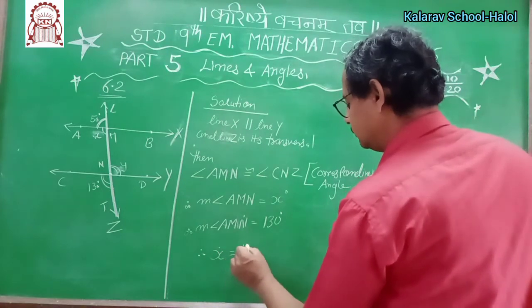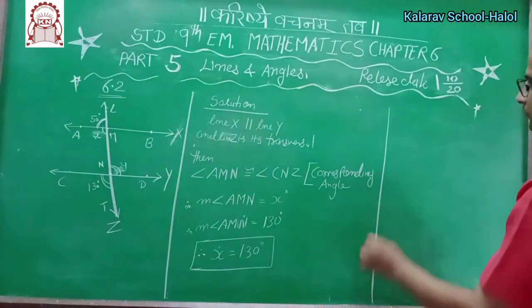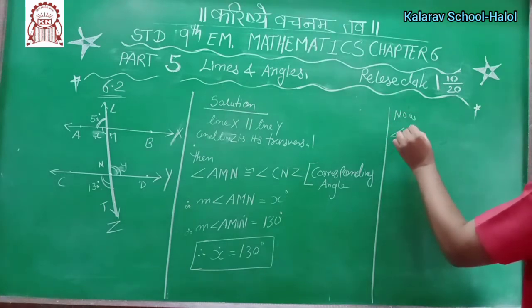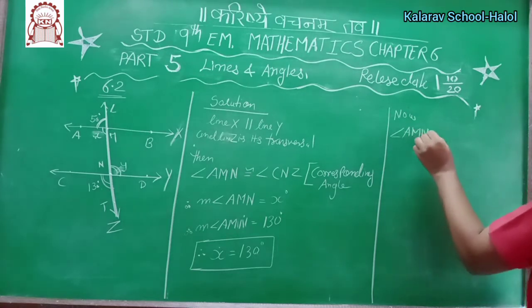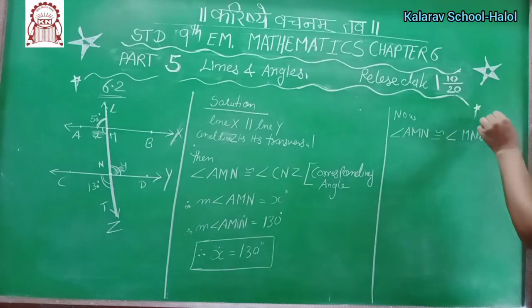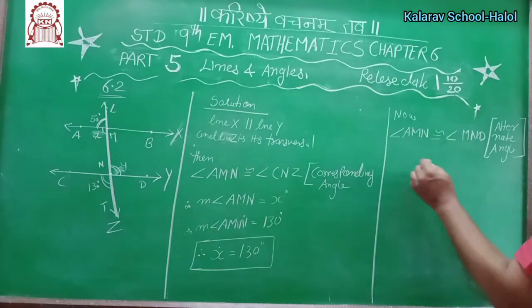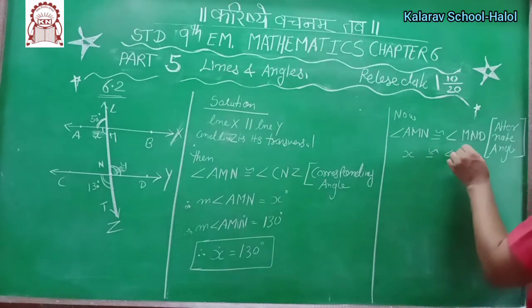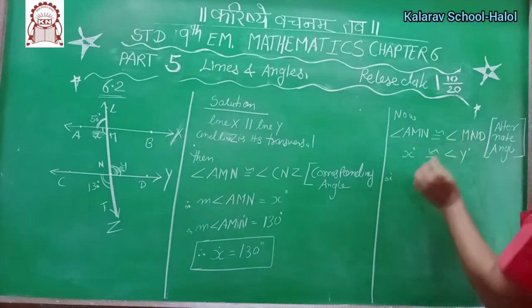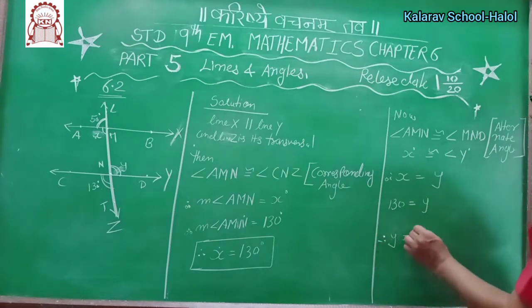Therefore, measure of angle AMN equals 130, because this and X are equal. Therefore X equals 130. You got the value of X. Now, angle AMN is congruent to angle MND — the reason is alternate angles. If both angles are alternate, then angle X is congruent to angle Y. Therefore X equals Y. The value of X is 130, so 130 equals Y, therefore Y equals 130.